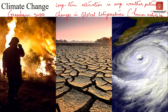Climate change is nothing but a change in climate patterns — an alteration in the average weather patterns globally or regionally over a period of time. This climate change is due to human activities, specifically the emission of greenhouse gases, which is resulting in global warming. And this global warming is in turn leading to climate change. Therefore, it is important to understand what global warming is in order to understand how it causes climate change.